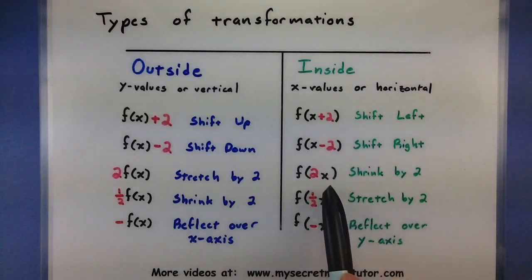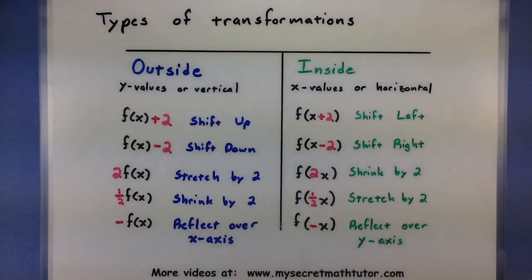When you try and do these same things to the inside of the function, often they work the opposite as what you think they should. So if you multiply on the inside of a function by a number larger than 1, then it will actually shrink it horizontally. If you multiply on the inside by a number between 0 and 1, then it will actually stretch it horizontally. We'll see this in our examples so you can get an idea of all of these different transformations.